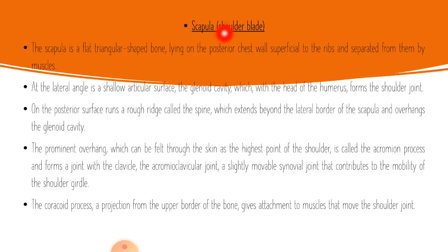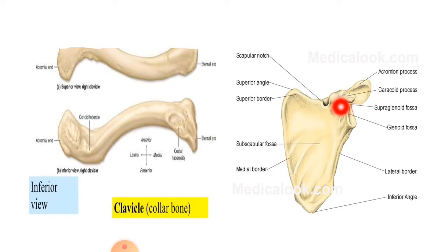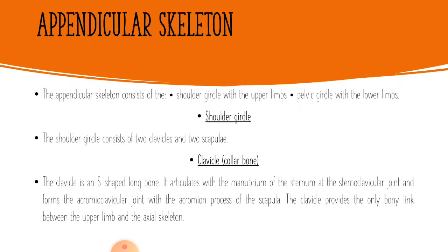Next is the scapula, also called the shoulder blade. The scapula is a flat, triangular-shaped bone lying on the posterior chest wall, superficial to the ribs and separated from them by muscles. At the lateral angle is a shallow articular surface — the glenoid cavity — which with the head of the humerus forms the shoulder joint. The glenoid cavity articulates with the head of the humerus to form the shoulder joint.